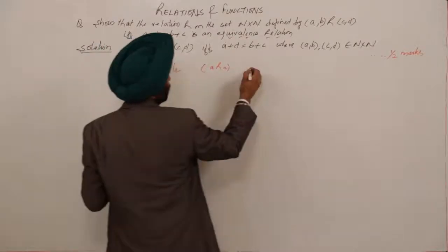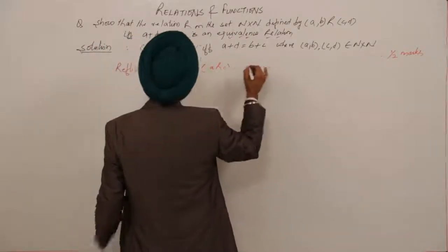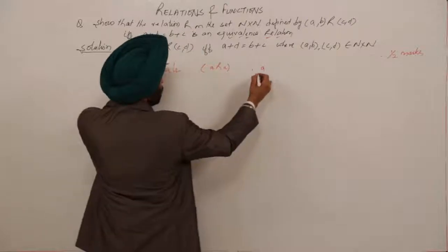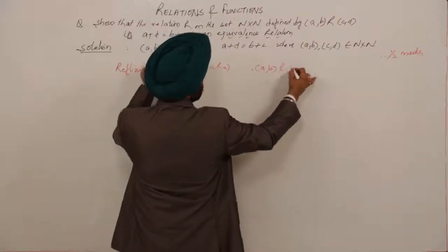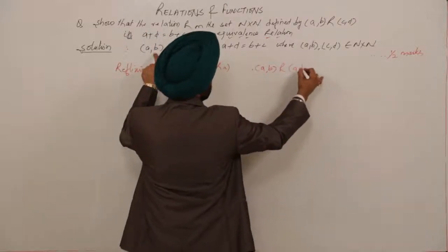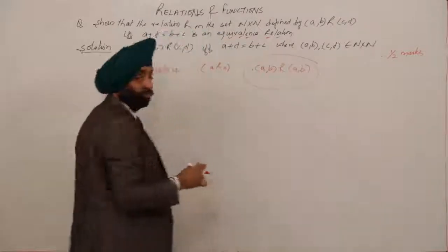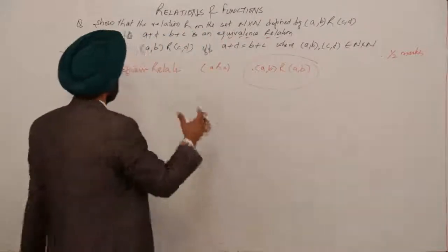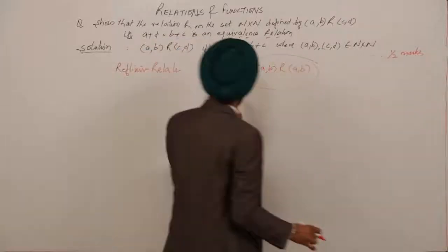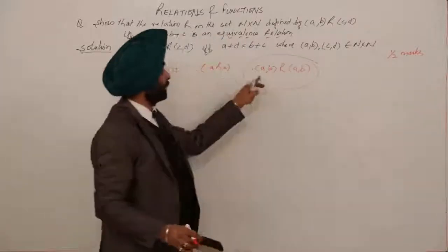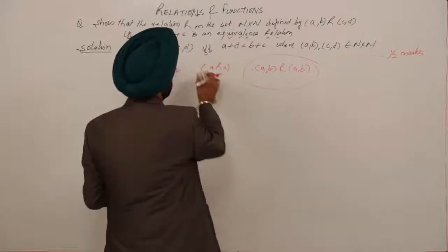What we should be having? We should be having (a,b) in relation with (a,b). This is the required thing. You can write on the rough side — we are having (a,b) R (a,b).